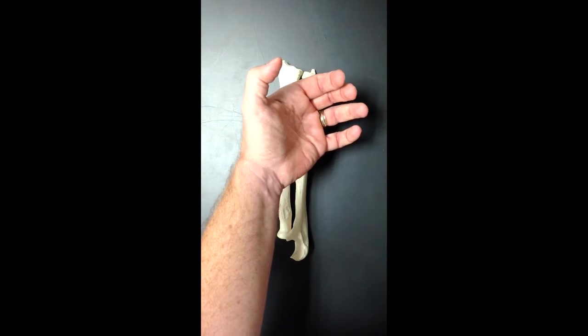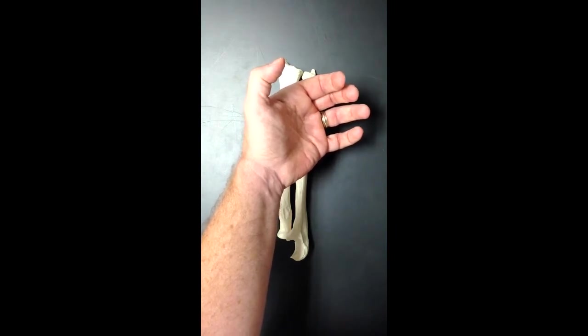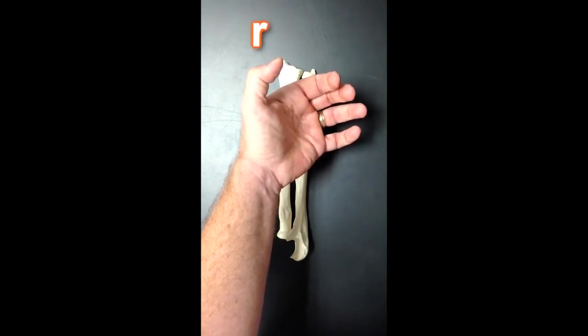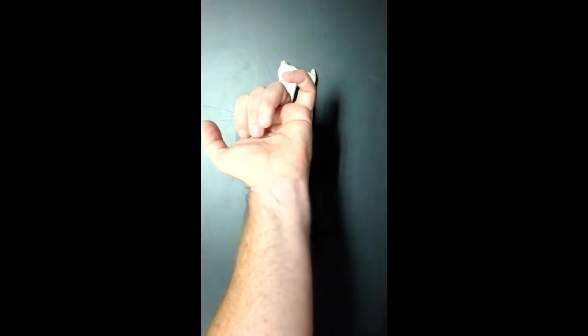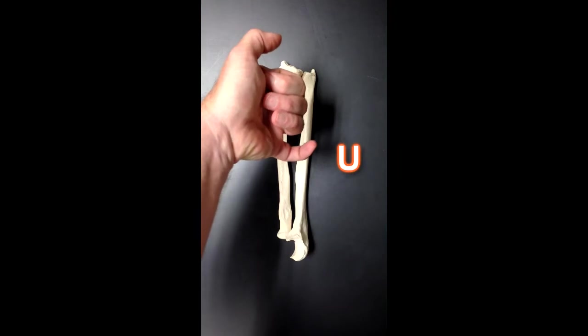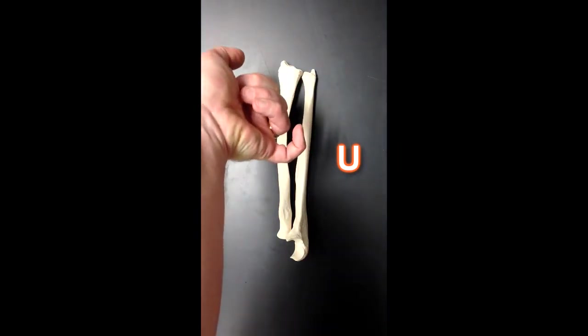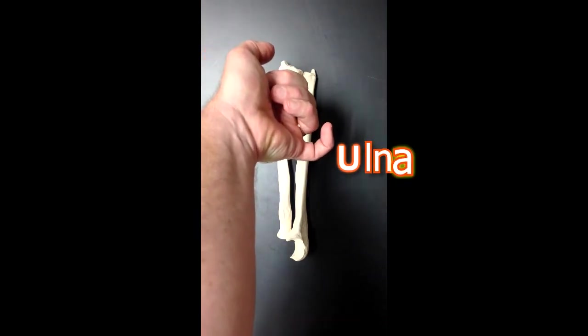This thumb right here only has two phalanges and it can make a lowercase R, R for radius. The pinky has three phalanges so it can make a U, U for ulna.